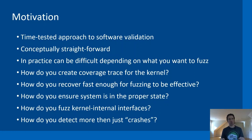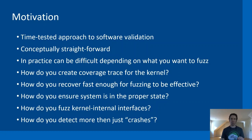How do you fuzz kernel internal interfaces? It's quite challenging even when fuzzing well-established APIs like the system call interface. For kernel internal interfaces, this can be especially difficult. And we might want to detect more than just crash conditions — we might be interested in detecting other scenarios like double fetches, for example.